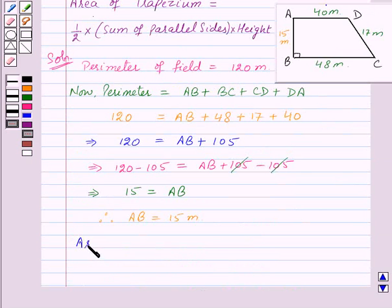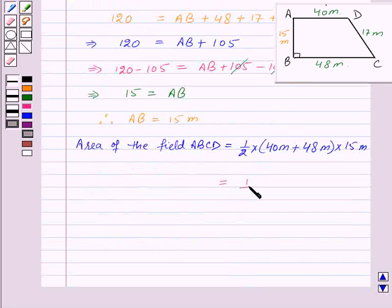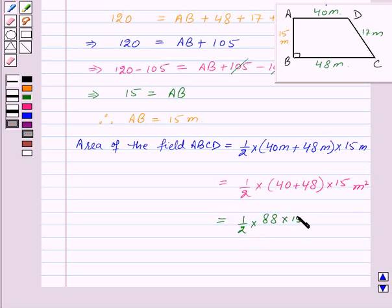Area of the field ABCD equals one-half times 40 plus 48 times 15 meters squared. That is one-half times 88 times 15 meters squared, which on simplifying gives 660 meters squared. Therefore, area of the field ABCD is equal to 660 meters squared.